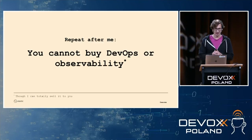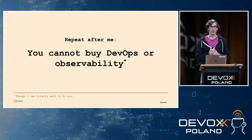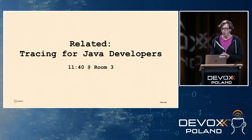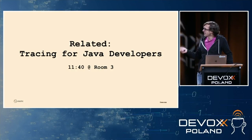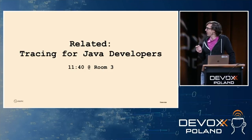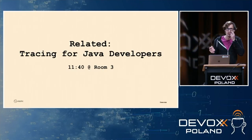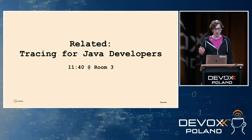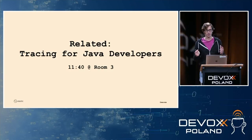Repeat after me: you cannot buy DevOps or observability — but I can sell it to you. Elastic does sell a lot of observability tooling. In the next time slot in room 3, there's a talk on tracing for Java developers to make all of this more hands-on: how tracing works and how it works in a Java application. This talk was more of a fun overview.